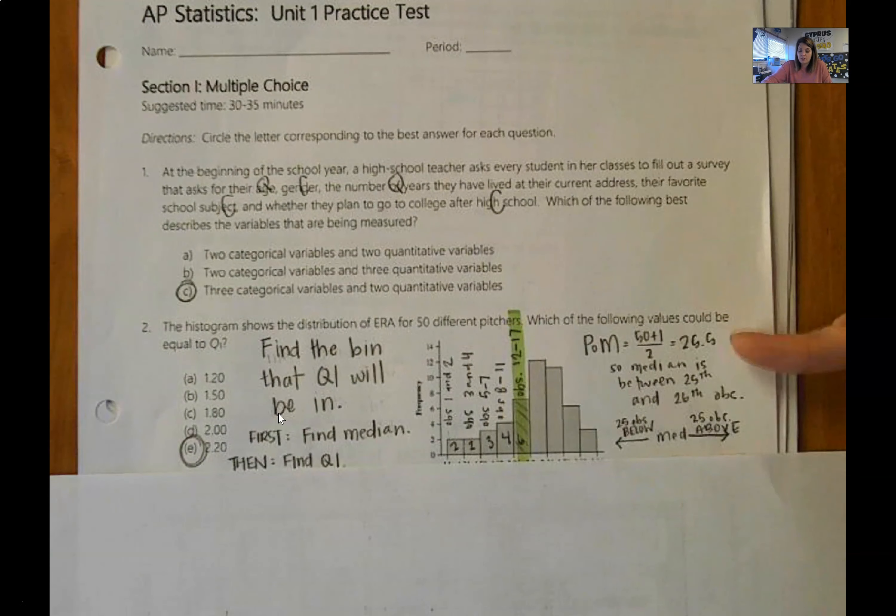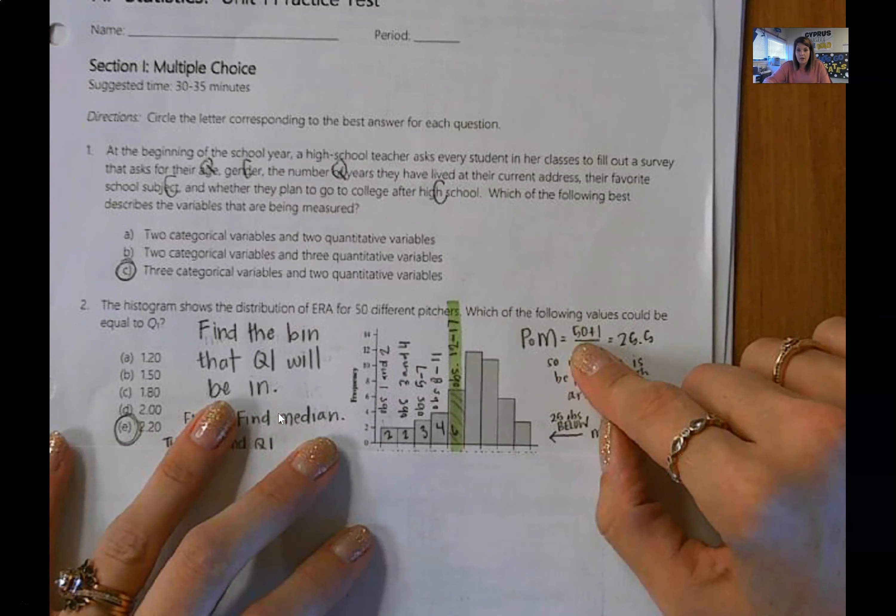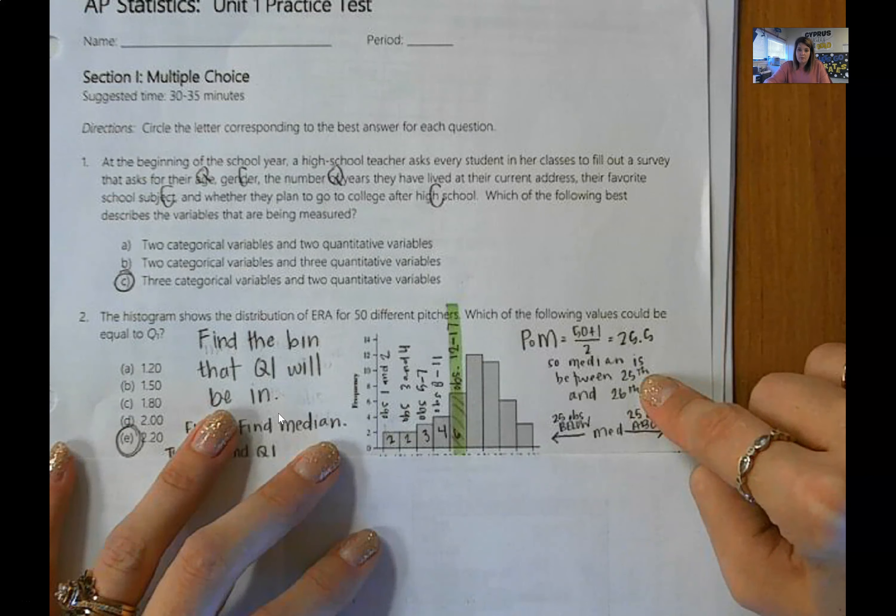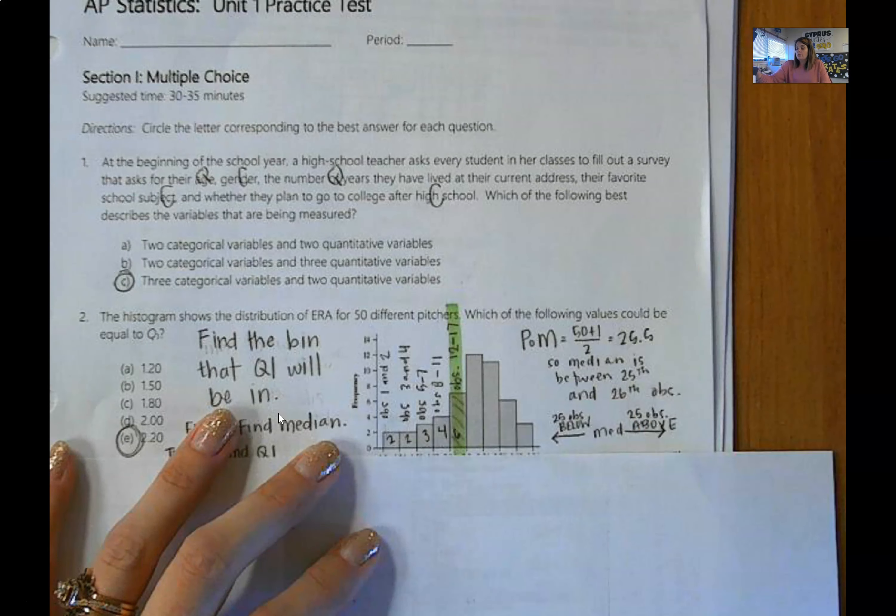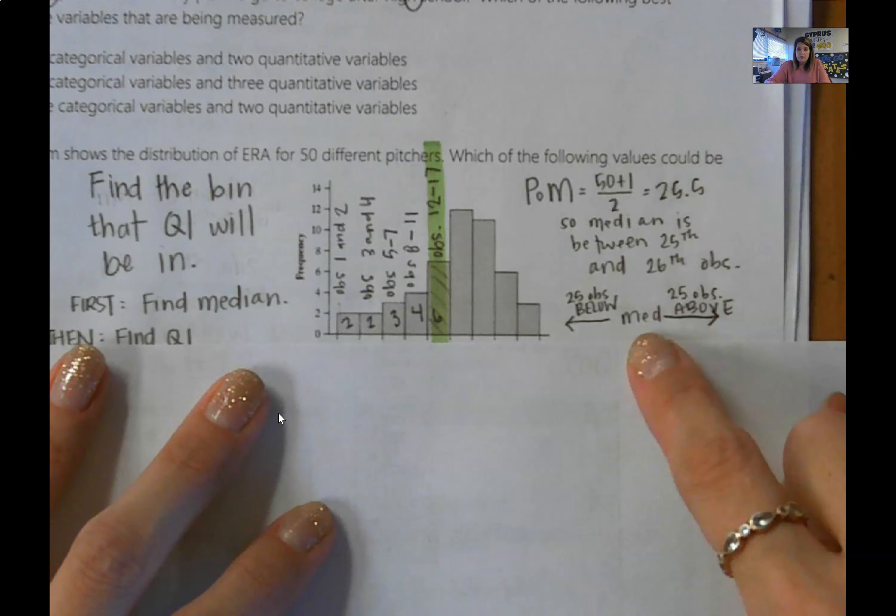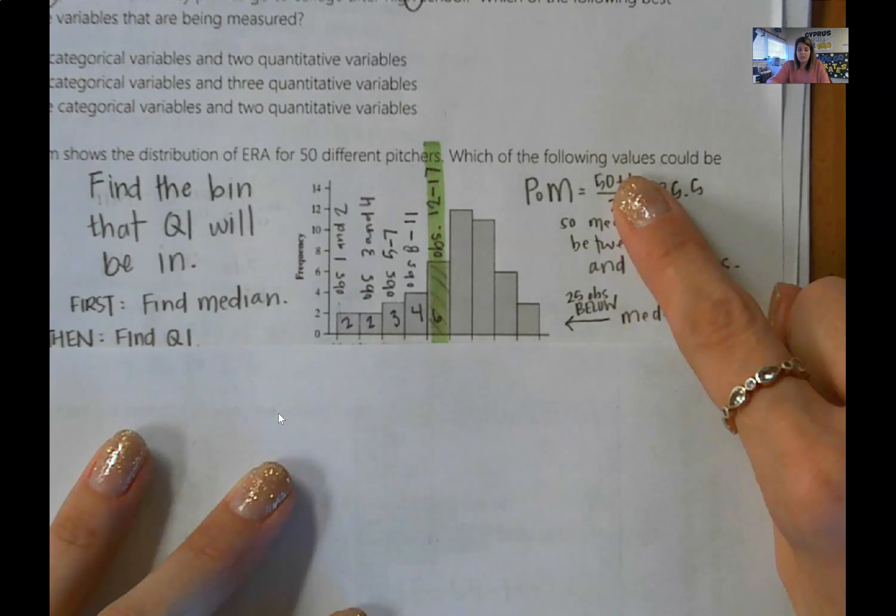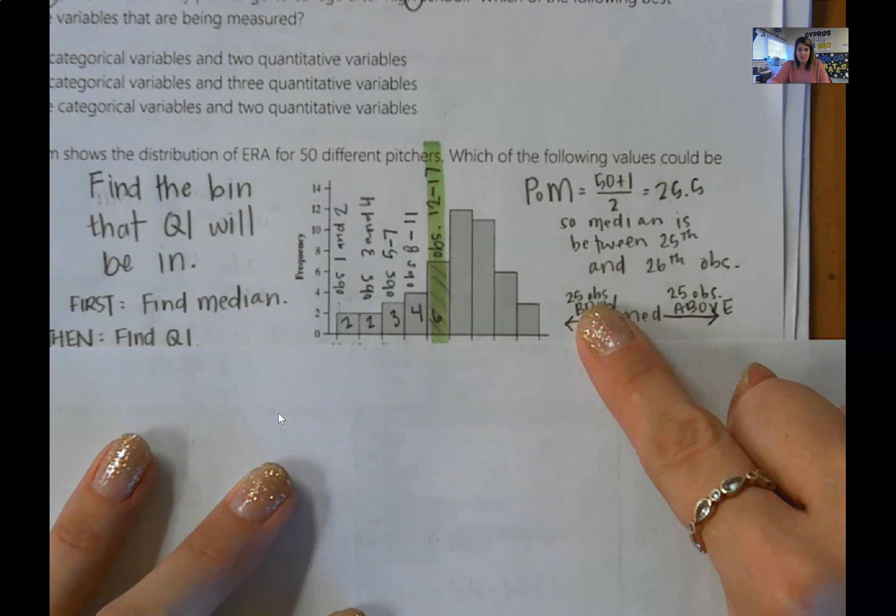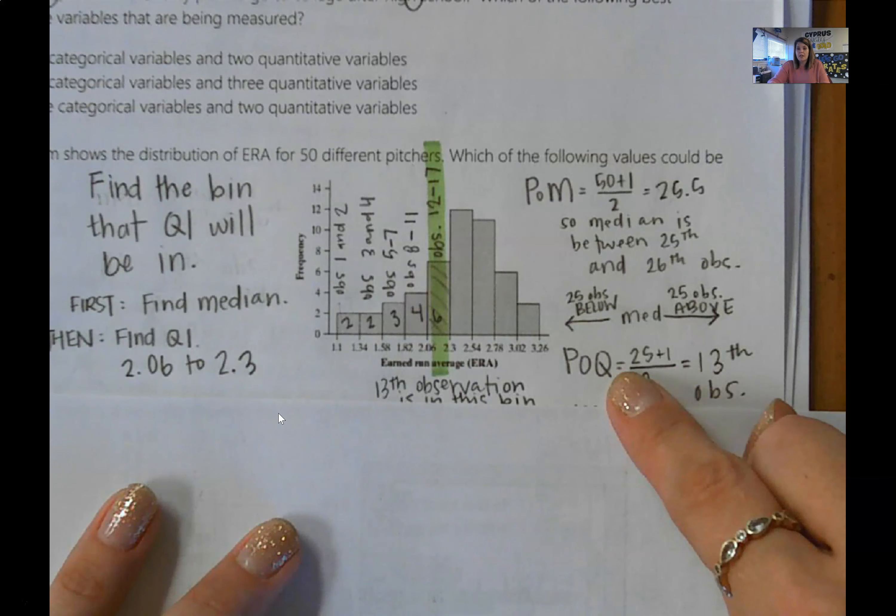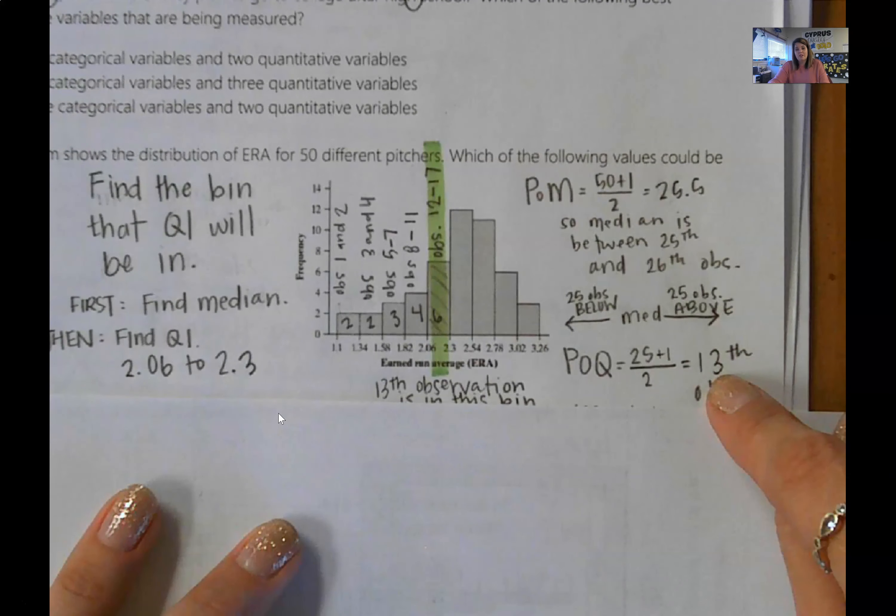So the first thing that you have to do is find the position of the median. And the formula is right here to the right. You get 25.5. So the median is between the 25th and the 26th observation. How that helps me find the quartile is that now I know that my median is in the middle, and there are 25 observations below my median and 25 observations above my median, because there's a total of 50 observations. My quartile is the middle of these 25 observations. So I can use the same formula. The position of my quartile is 25 plus one divided by two, which tells me that it's the 13th observation.